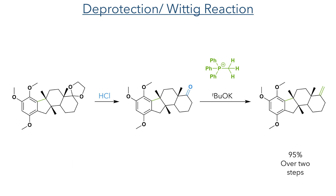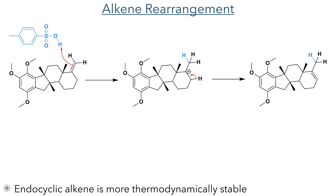With the four rings required for the final products now installed, the acetal was deprotected using hydrochloric acid and the resulting ketone was once again reacted in a Wittig reaction to generate the exoalkene in a 95% yield over two steps. This exoalkene was then induced to rearrange using tosic acid. This protonates the double bond, generating a cation on the tertiary carbon centre and promotes the elimination of a proton to form the more thermodynamically stable endoalkene.